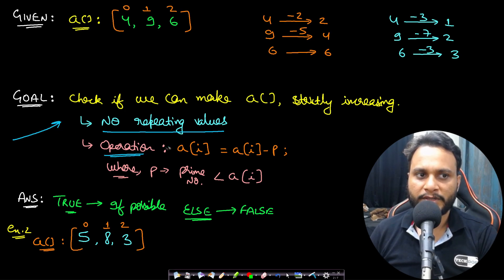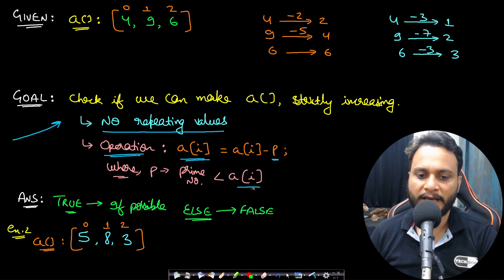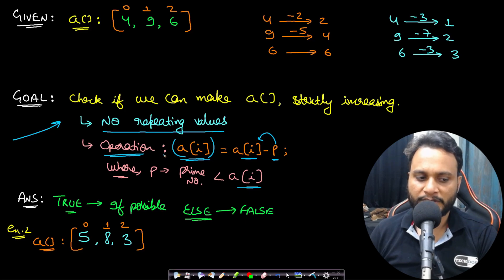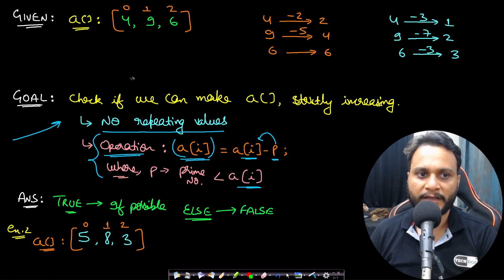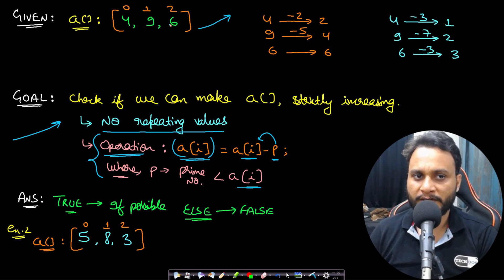The allowed operation is: we can take any item a[i] and take a prime number p strictly less than a[i], subtract p from a[i] to reduce its value. The problem asks: can we apply these operations zero or one time on each index in such a way that we generate a strictly increasing array? In this case, is [4, 9, 6] strictly increasing? No.